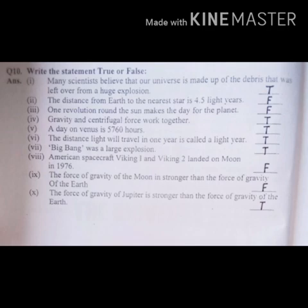Number 5. A day on Venus is 5760 hours. It's true. Venus per one day 5760 hours ka hai. It's true.